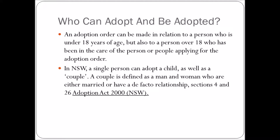Now, who can adopt and be adopted? An adoption order can be made in relation to a person who is under 18 years of age, but also a person over 18 who has been in the care of the person or people applying for the adoption order. So if you were a foster child and you're now over 18, you can still be adopted by your foster parents. This brings symbolic recognition but also certain legal rights in relation to wills and property, making it easier to establish you are their legal child.